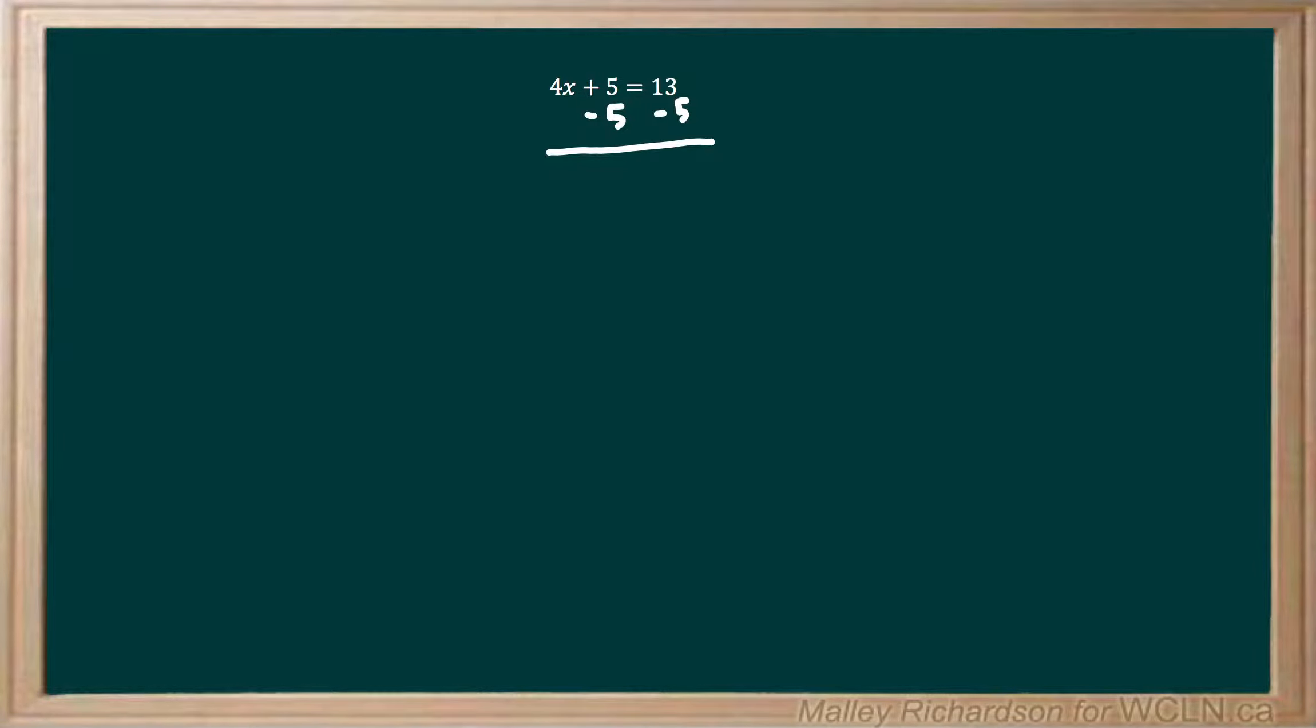We subtract 5 from both sides, then we draw our line and we're left with 4x plus 5 minus 5, which leaves us with 4x equals 13 minus 5, which leaves us with 8.